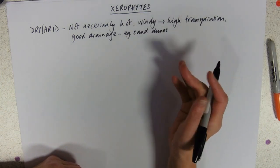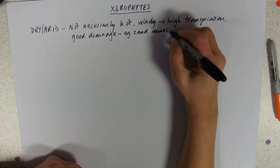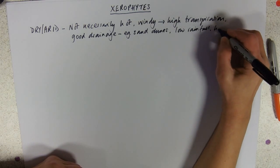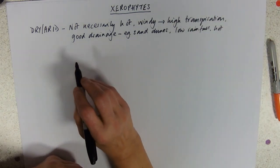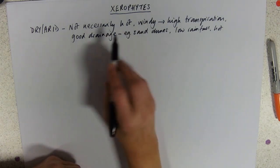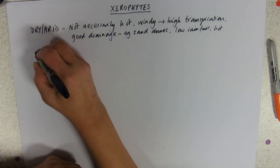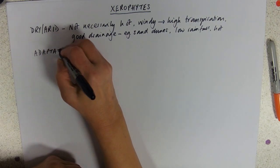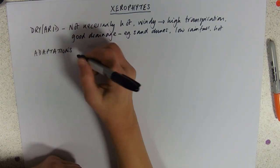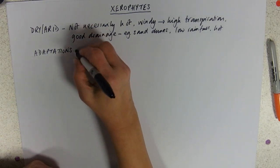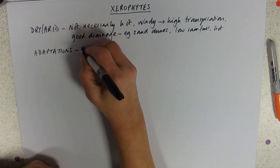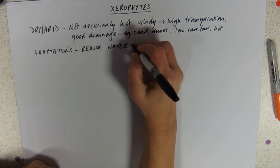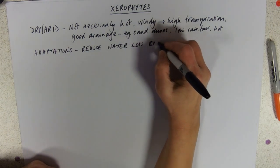And of course anywhere where it's hot with hardly any rainfall - low rainfall and hot as well - but they're not necessarily hot environments. So if you're a Xerophyte you've got big problems with water availability, and therefore the adaptations that have favoured this type of plant's survival are adaptations that reduce water loss by transpiration.